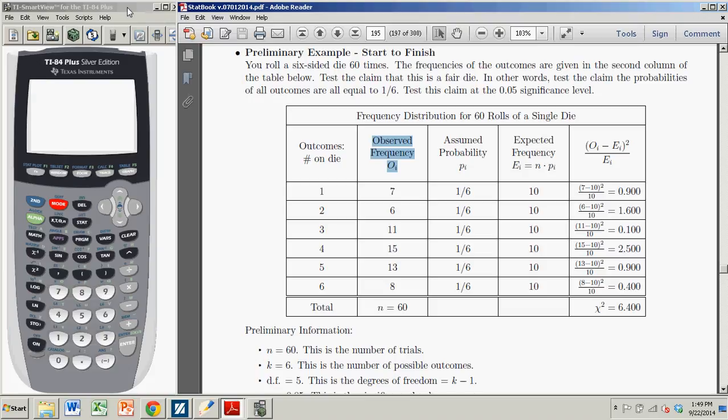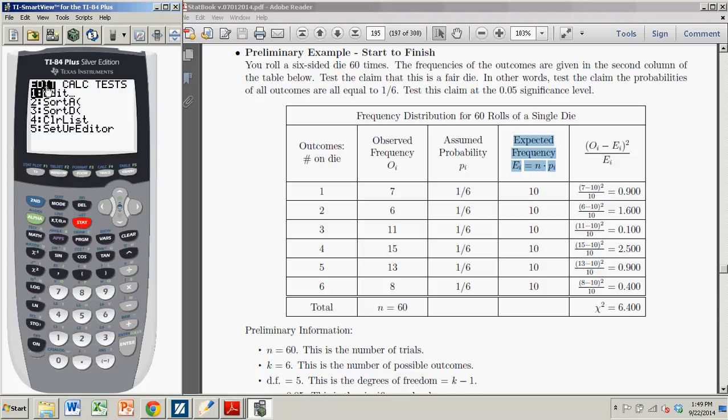Going over to the TI-84, we're going to enter these two lists, observed frequencies and expected frequencies. I'm going to go to STAT and hit Enter where it says Edit. That takes me to my lists. List one will be the observed frequencies: seven, six, and so on. Then go over to list two and enter the expected frequencies, all tens. Once you have your two lists of observed and expected frequencies, it's really quite quick and easy.